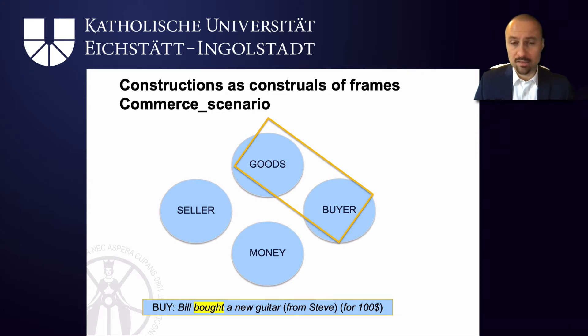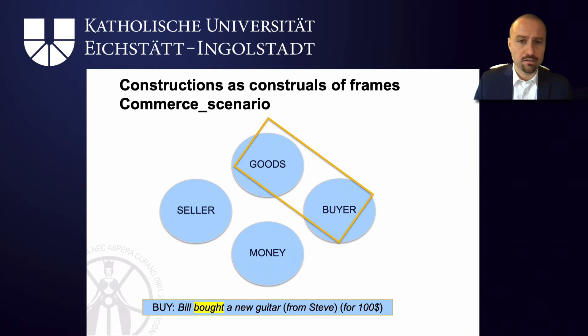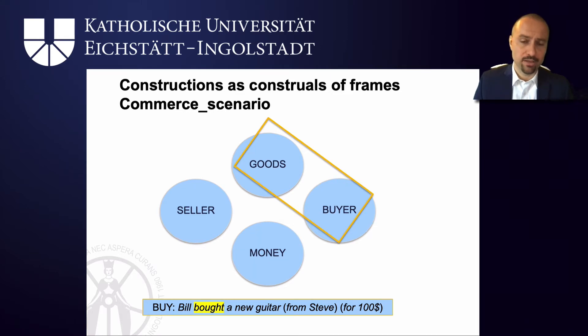At the same time, the seller and the money are not forgotten — they constitute background knowledge that is also activated in the scene. This explains why when someone says 'Bill bought a new guitar' you can then ask 'how much did it cost?', because the cost involved is also conjured up by this particular frame.